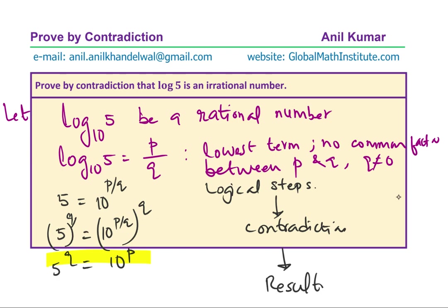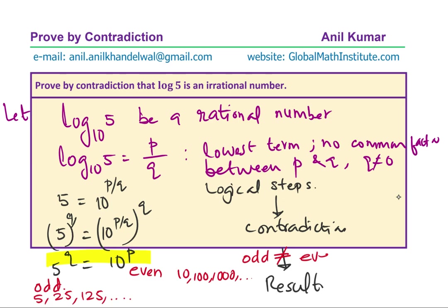You can see that 5 to the power of anything will be an odd number — it will end with 5. For example, 5 squared is 25, 5 cubed is 125, and so on. On the other hand, 10 to the power of p is an even number — it ends with 0; it could be 10, 100, 1000, and so on. That is the contradiction: an odd number cannot equal an even number. From this contradiction, we have shown that log to the base 10 of 5 is an irrational number.